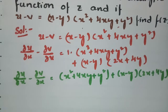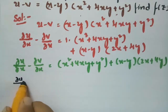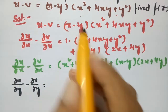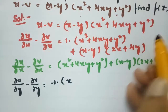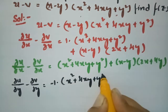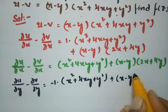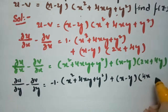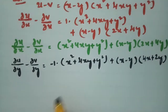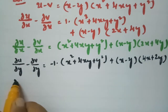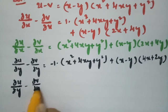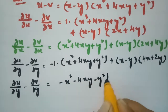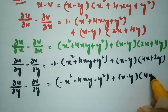Next, differentiating with respect to y: ∂u/∂y minus ∂v/∂y, again by UV rule. Derivative of the first function (x - y) with respect to y is -1. So we get -1·(x² + 4xy + y²) plus (x - y)·(4x + 2y). Expanding: ∂u/∂y minus ∂v/∂y equals -x² - 4xy - y² + (x - y)(4x + 2y).